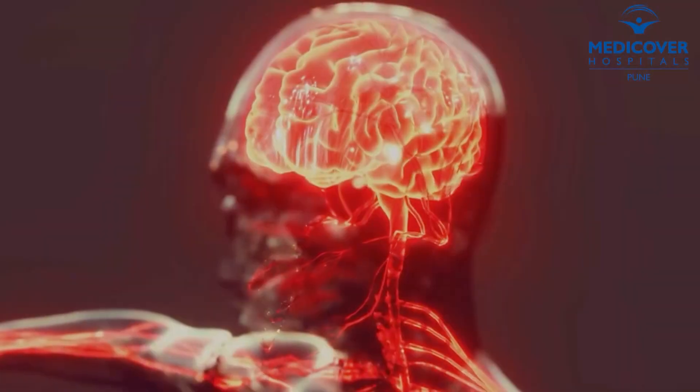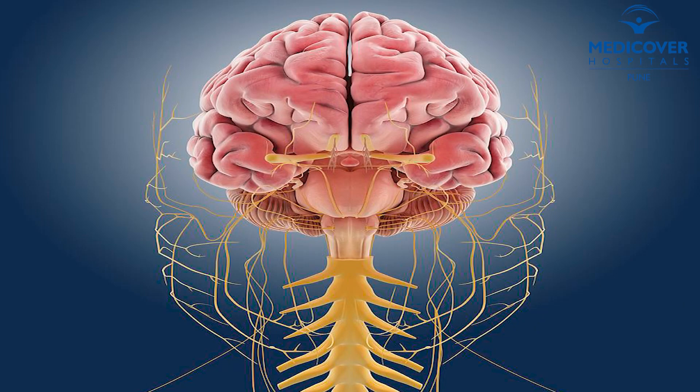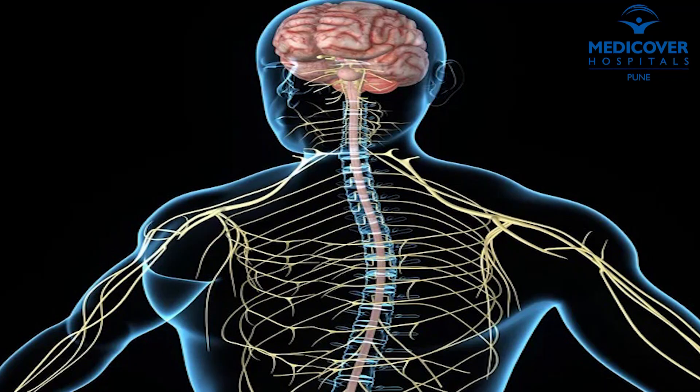Today we'll be talking about the common problems in neurology. Before going ahead, I'd like to give you an idea of what neurological disorders are. We divide them into two categories: disorders coming from the central nervous system and disorders coming from the peripheral nervous system. The central nervous system consists of the brain and spinal cord, and the peripheral nervous system consists of the peripheral nerves of the hands, legs, and muscles. We have different types of disorders coming from these different areas of the nervous system.